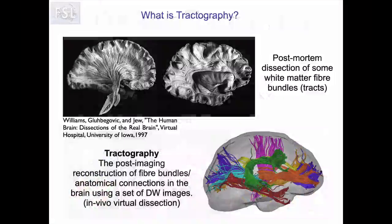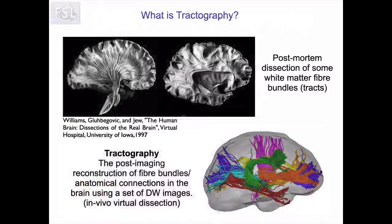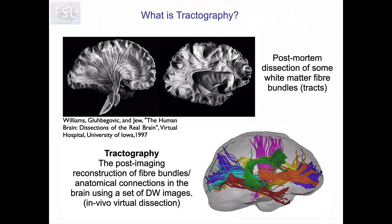So what do we hope to obtain from tractography? We know from post-mortem dissection studies as well as from tracer and other ex vivo modalities that most of the axons within the brain are not just randomly oriented — they organize within major white matter fiber bundles. Our goal in tractography is to use the information in diffusion MRI to reconstruct these white matter bundles not ex vivo but in vivo, in the living human brain.